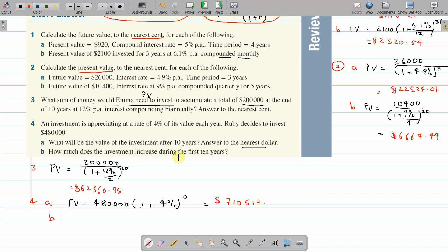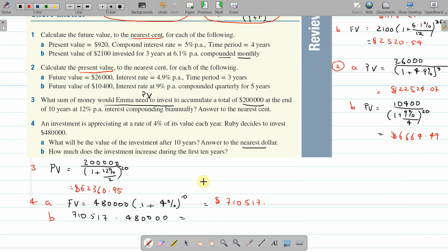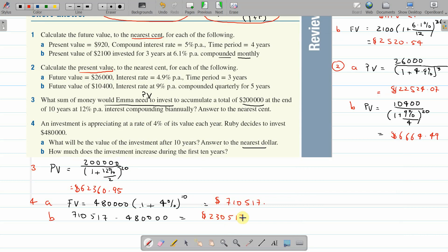And how much does the investment increase? That is a simple matter of finding the difference between what you started with and what you got now. So, we'll do $710,517 minus what you started with. The difference between them is how much it's increased: $230,517 to the nearest dollar. That's the increase over the 10 years from where you started to what it is now. Thanks, everyone.